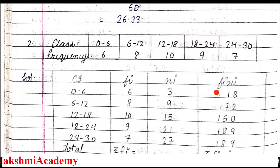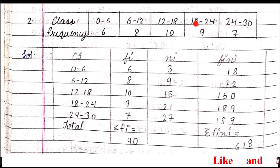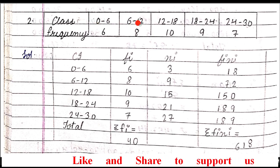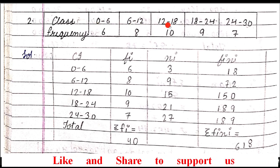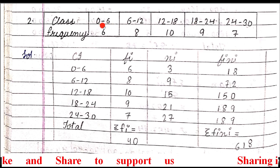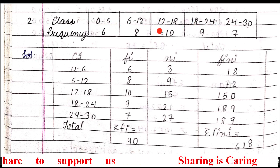Now we will move to question 2 of the same exercise. Again we have to find out the mean of this frequency distribution, and it is again a grouped frequency distribution. It is grouped because data are in groups — like 0 to 6 is the first group, then 6 to 12 is the second group. So it is named as grouped frequency distribution table.